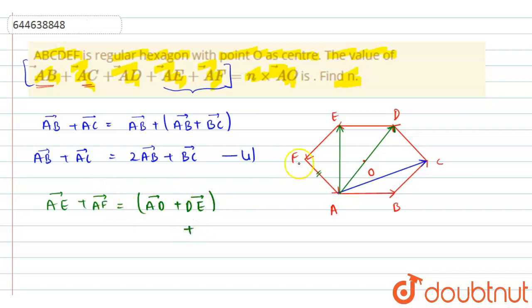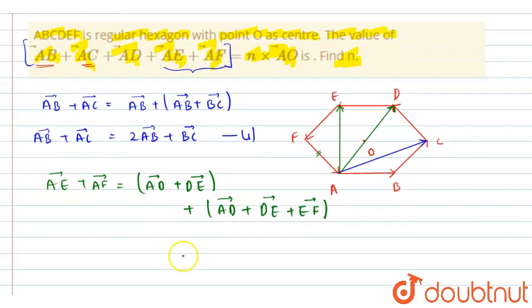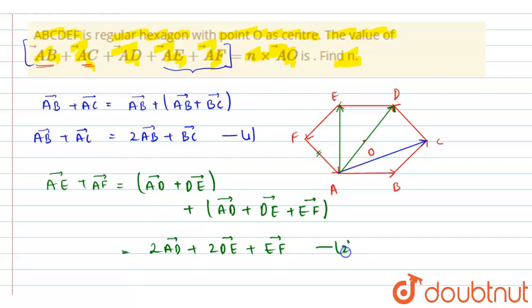For AF vector, using parallelogram ADEF, we can write AF vector as AD vector plus DE vector plus EF vector. So AE vector plus AF vector gives us 2 AD vector plus DE vector plus EF vector. Let this be equation 2.